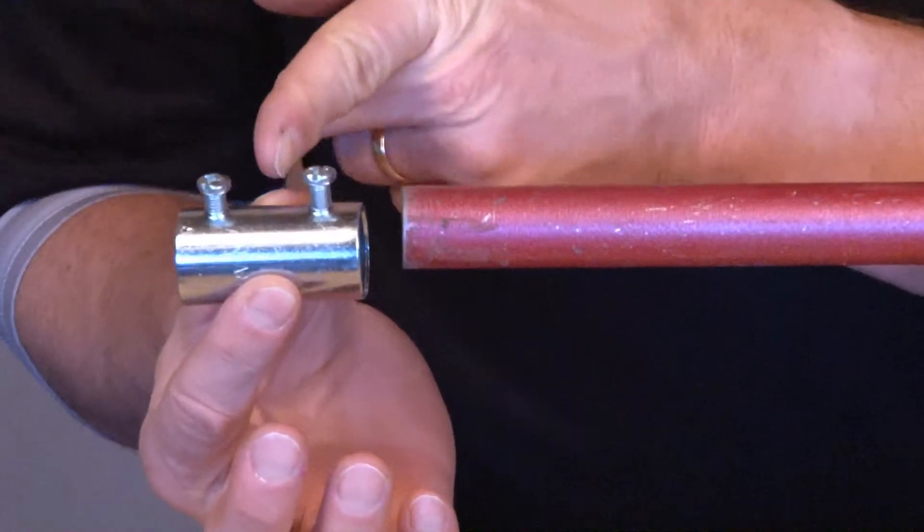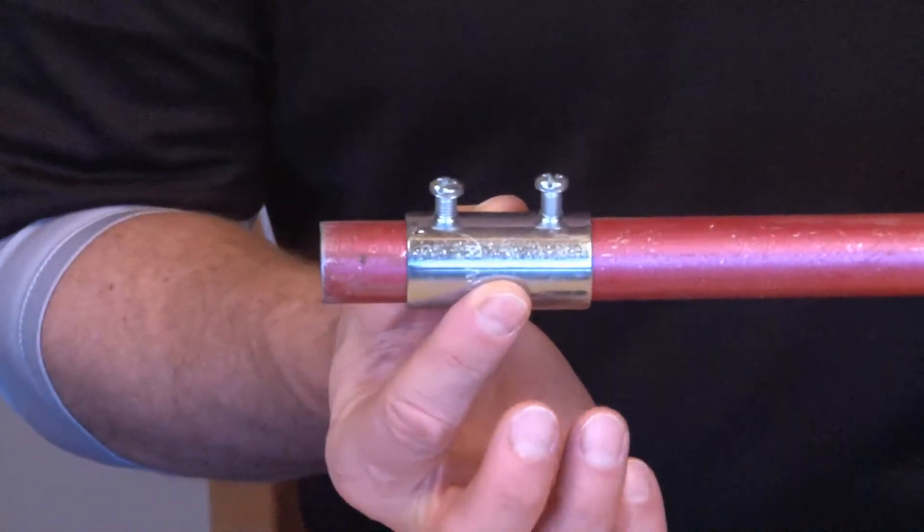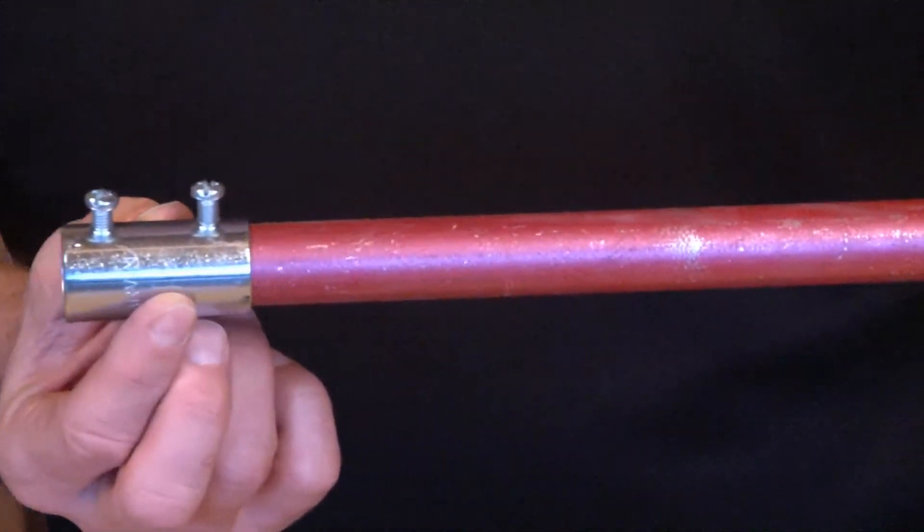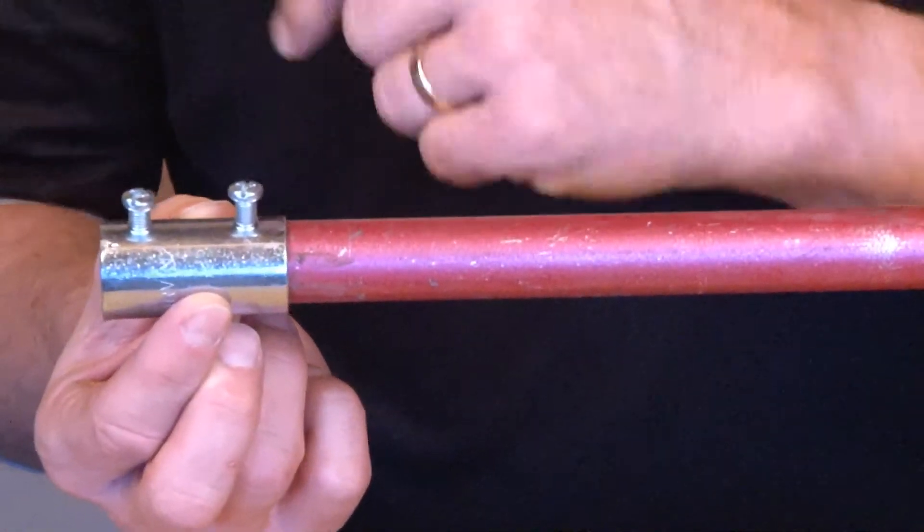This coupling has no stop in the middle, so you can slide it all the way along the conduit, position it as you need it, and then lock down the set screws.